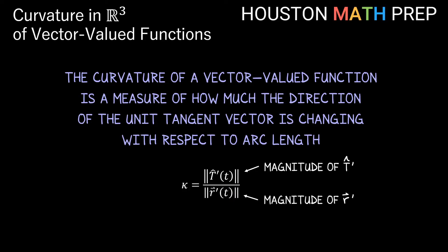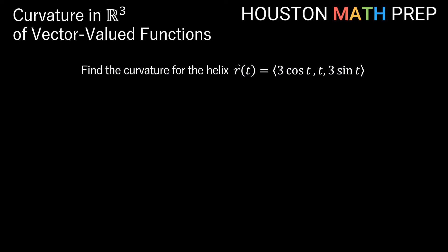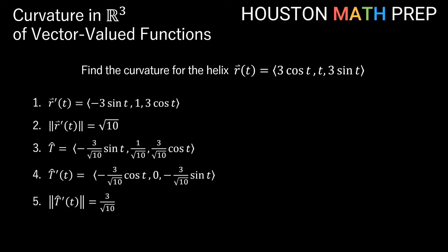The quantities magnitude of T̂-prime and magnitude of r-prime are also involved in finding unit tangent and principal unit normal vectors, so you might be asked for all three together. We're going back to an example where we already worked out our unit tangent and principal unit normal vectors in our previous video in this series — you can find the link in the description below. We found r-prime of t, then the magnitude of r-prime, then the unit tangent, then T̂-prime, and then the magnitude of T̂-prime. So we have two magnitudes, and curvature is the magnitude of T̂-prime divided by the magnitude of r-prime.